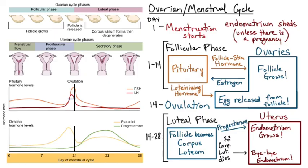Those were the stages of the ovarian and menstrual cycle. There's a lot going on, but following the flow chart and thinking about the cause and effect relationship of each step will help you understand how these different organs work together to regulate the cycle. Thanks for watching — have a great day.